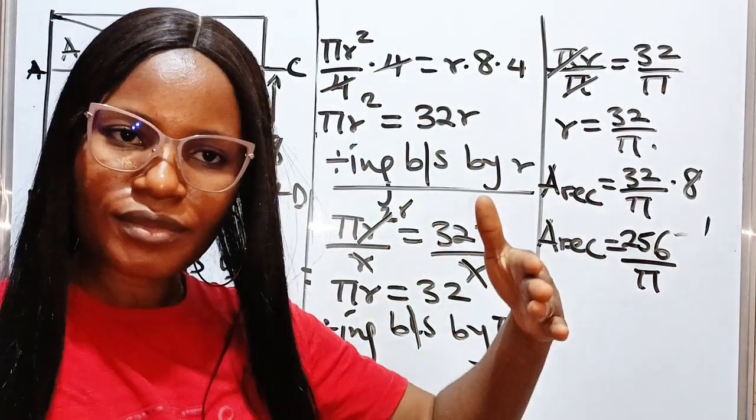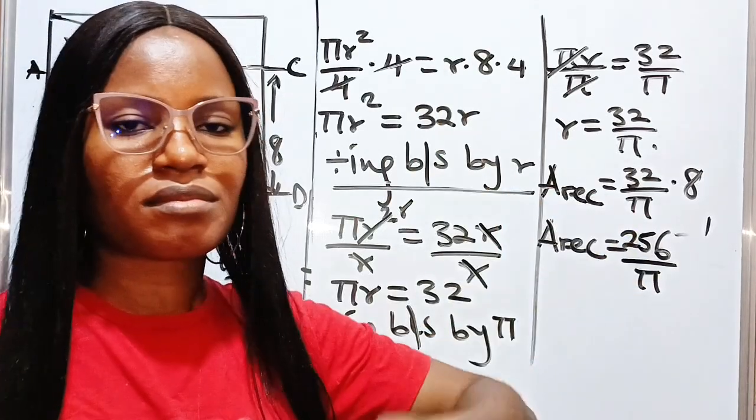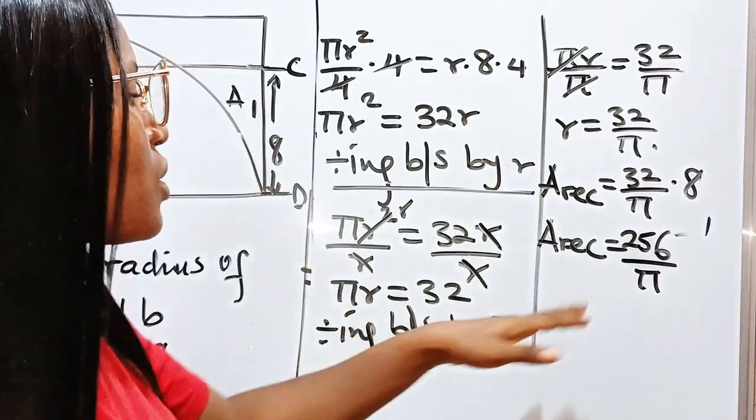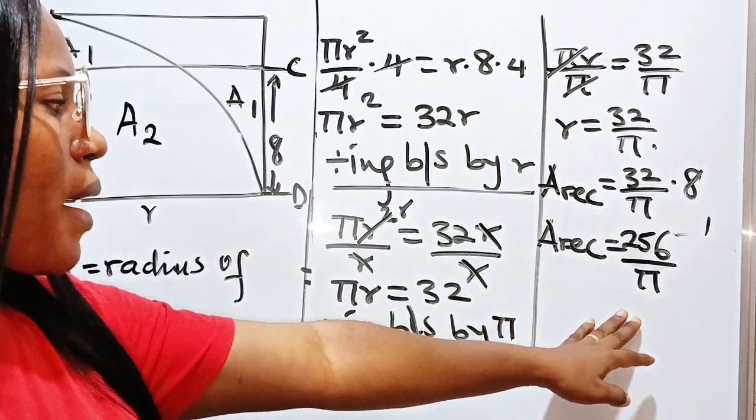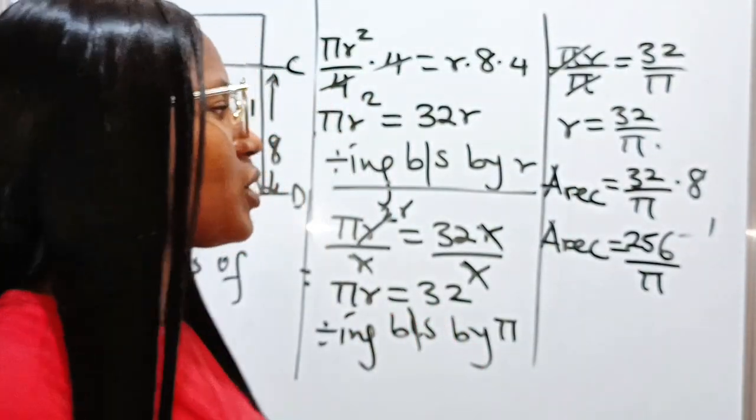So this should be our answer in terms of pi. You can actually press your calculator and get this in decimal. So this is the area, 256 divided by pi square units. Thank you so much for watching. Bye.